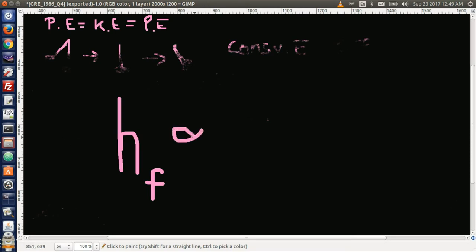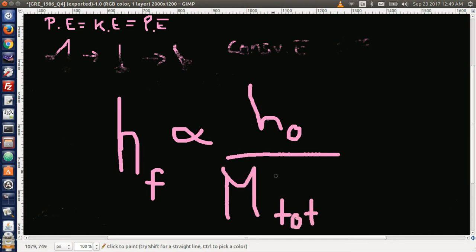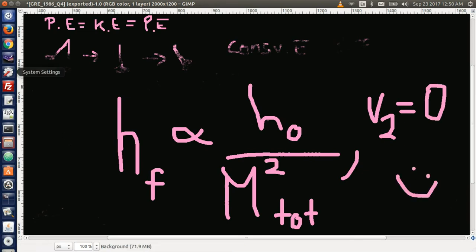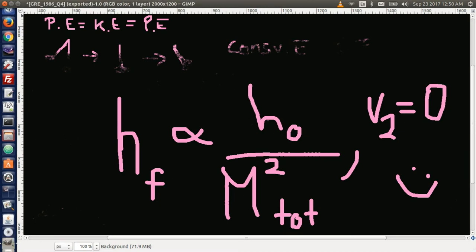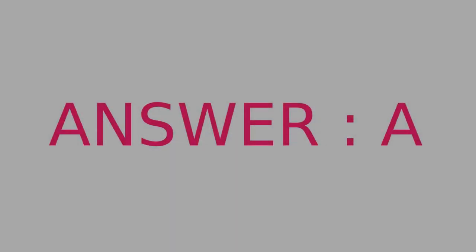of a situation like this is the original height over the total mass squared. And that's only when you have a stationary object being hit. So what took several minutes to solve could have been done in 2 seconds. The answer to this question is A.